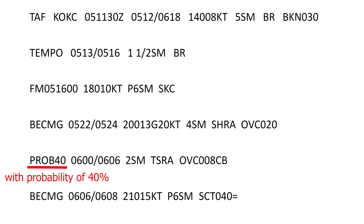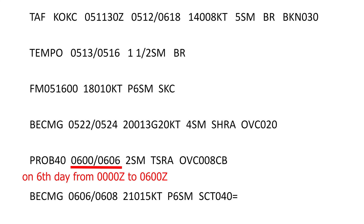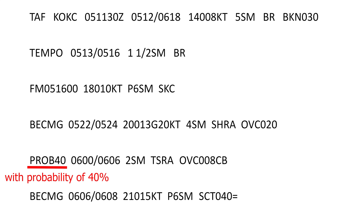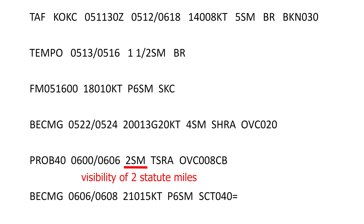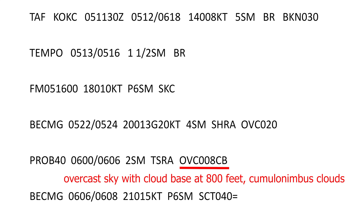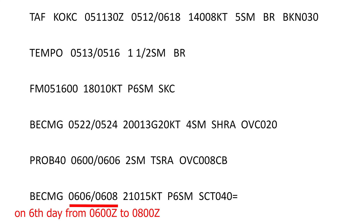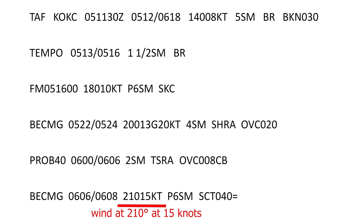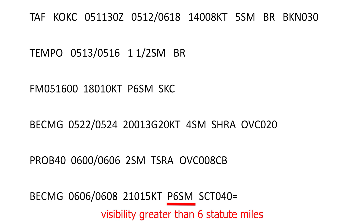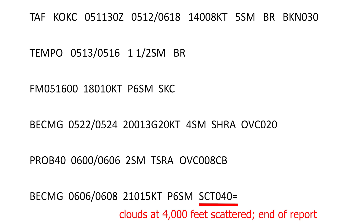The next valid period starts with PROB 40, which stands for probability of precipitation. So this time block would read: between midnight and 06:00 Zulu on the 6th, there is a 40% probability that visibility is 2 statute miles with thunderstorms and rain, overcast sky with cloud base at 800 feet with cumulonimbus clouds. The last period block would read: becoming from 06 to 08 Zulu on the 6th, wind at 210 degrees at 15 knots, visibility greater than 6 statute miles, clouds at 4,000 feet scattered. End of report signified by the equal sign.